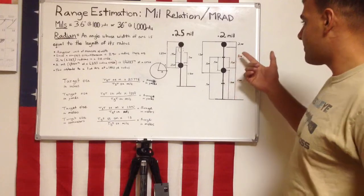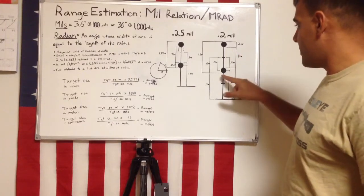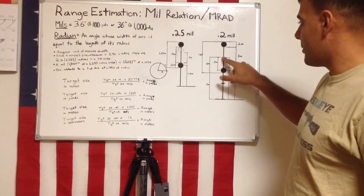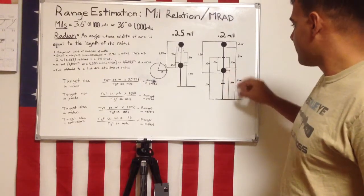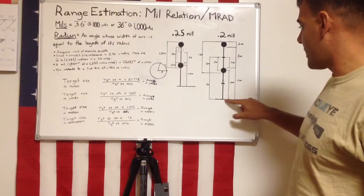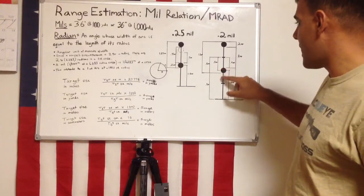But with a 0.2 mill dot, I can get 0.6 mills from the outside edge to the center. I can get 1 mill from the crosshair to the center. 1.1 mill from the crosshair to the outside edge of the first dot.